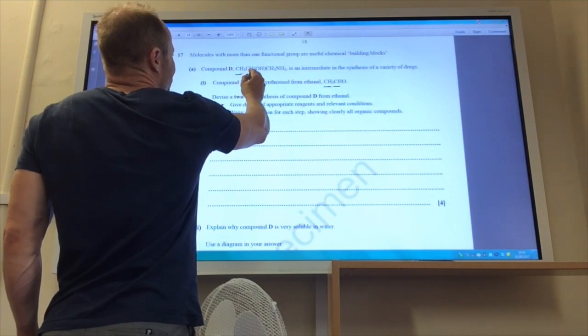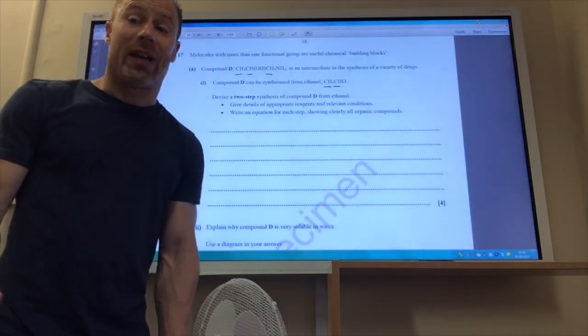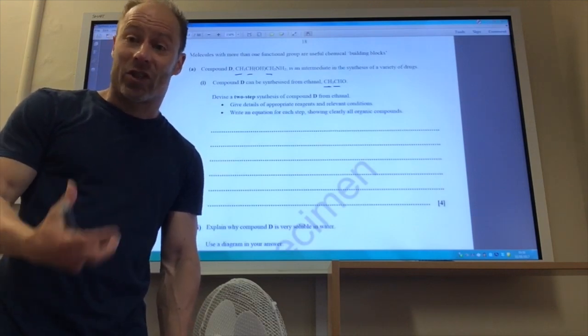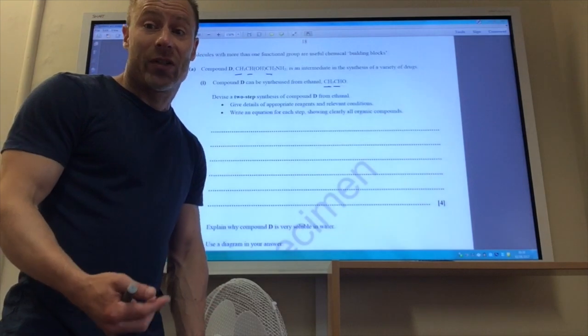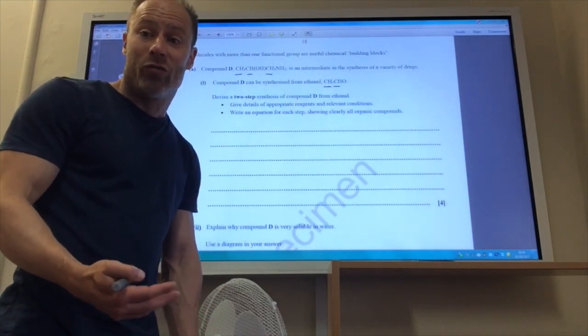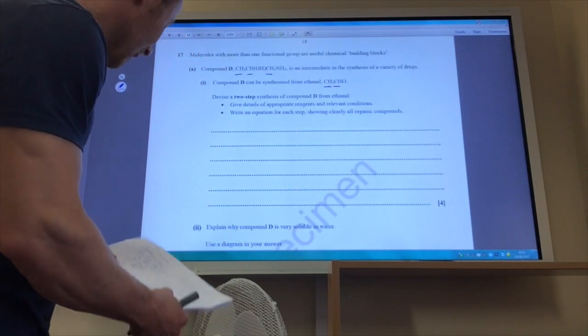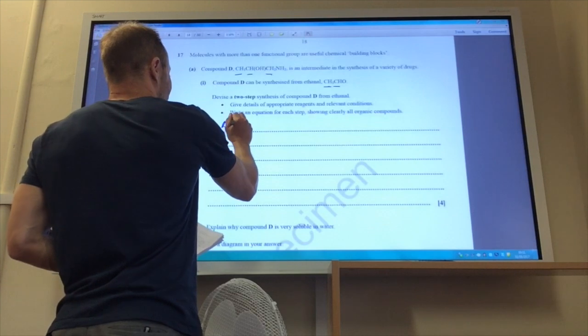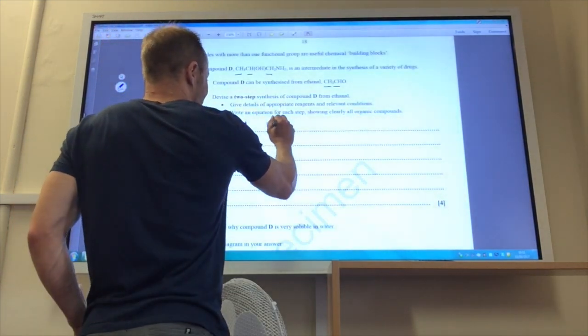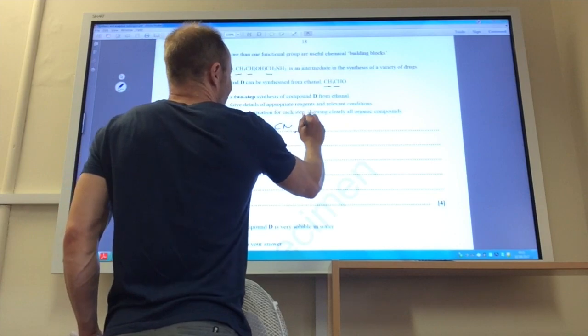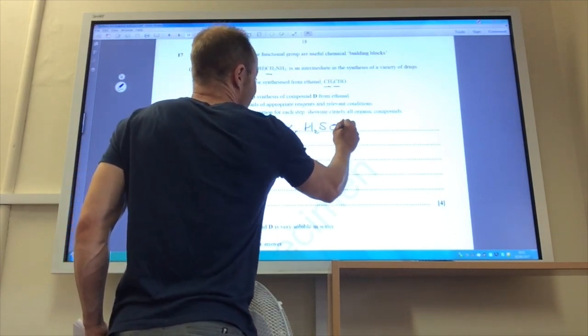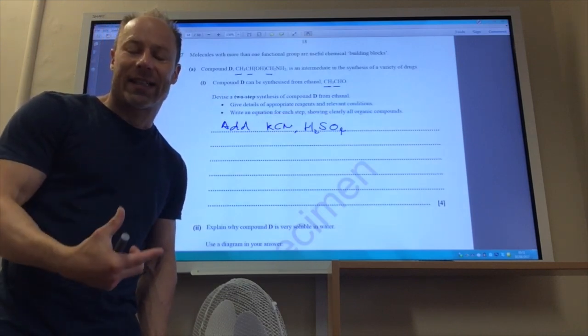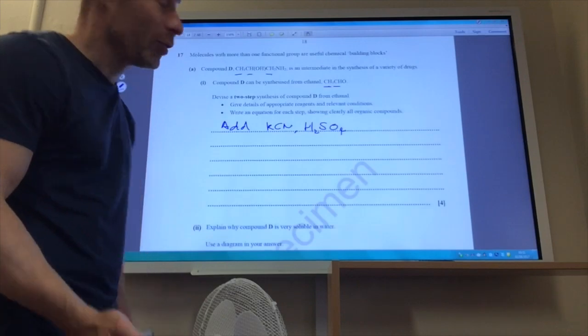But compound D has got three carbons. If you remember from your synthetic group, how would you introduce a new carbon atom? You generally would react it with the cyanide ion. Luckily for us, it's got a nice aldehyde group which we know will react with cyanide ions. First of all, we need to add potassium cyanide and sulfuric acid, and that generates hydrogen cyanide. Remember, we don't add hydrogen cyanide directly, we add potassium cyanide and then we generate it in situ by adding sulfuric acid.